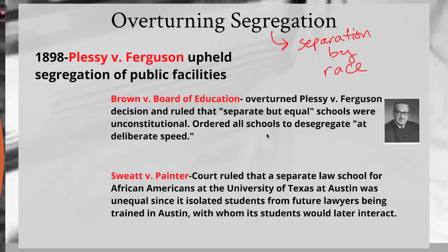The first major case dealing with education and equal protection under the law was Sweatt v. Painter in 1950. This happened in Texas at the University of Texas Law School. An African American law student was placed in a separate, makeshift law school — essentially a cubicle in a separate building. The court ruled this was unequal because it prevented him from interacting with other law students he would later face in court, denying him full training as an attorney.